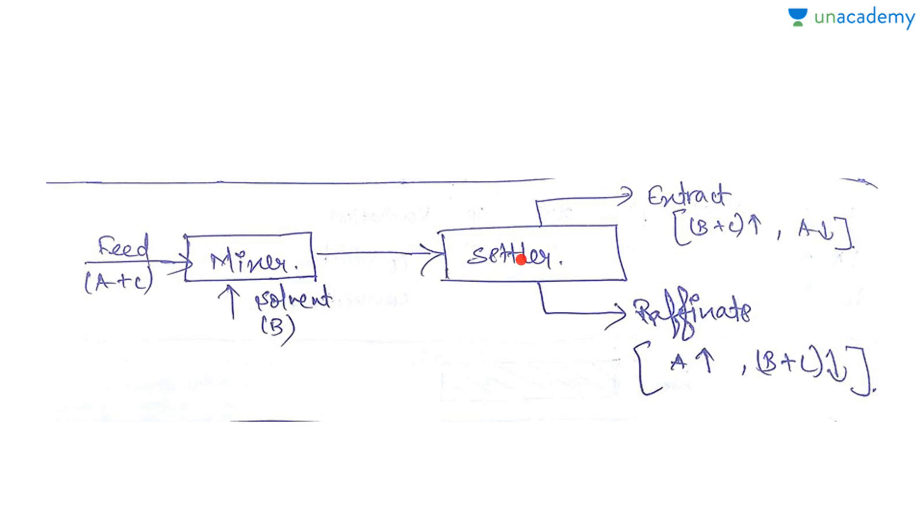In liquid-liquid extraction there are two important equipment: one is the mixer and the other is the settler. In the mixer, we have a feed of A and C, where A is the carrier and C is the solute. Solvent B is added, and both the feed and the solvent are mixed thoroughly. The resulting mixture is then sent to the settler.